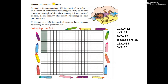More tamarind seeds. Amini is arranging 12 tamarind seeds in the form of different rectangles. Try to make more rectangles using 12 tamarind seeds. How many different rectangles can you make with 12 seeds?